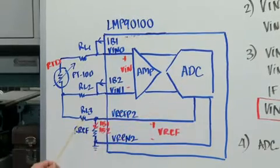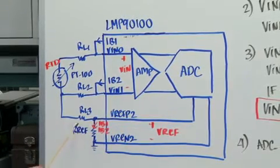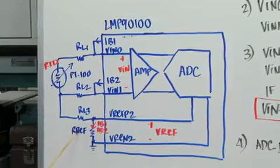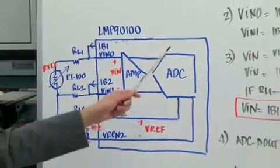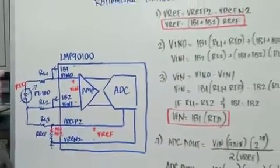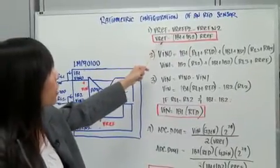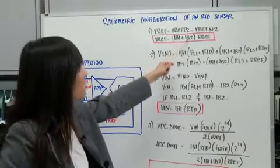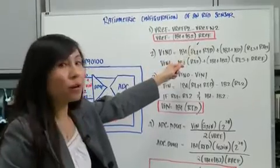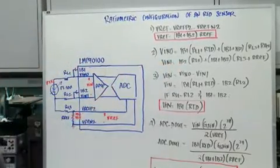So let's see how this ratio metric configuration can also reduce your sensor signal path error. Let's take a look at the equations on the right hand side. Let's first write the equation for Vref. Vref is just IB1 plus IB2 times RF. Let's take a look at the diagram to see how that works.